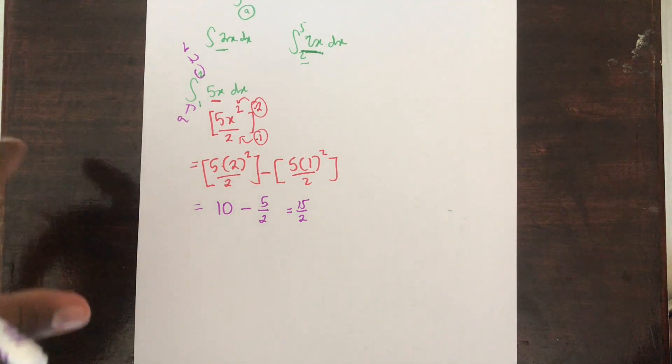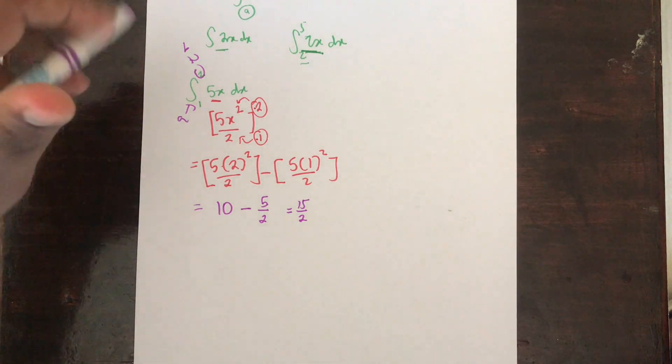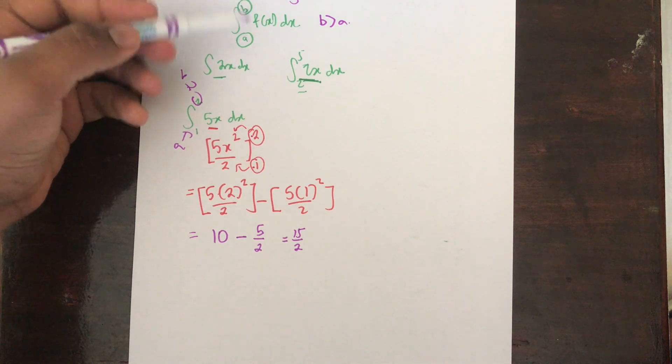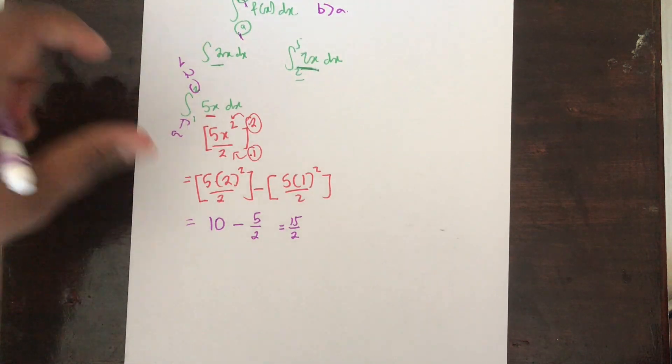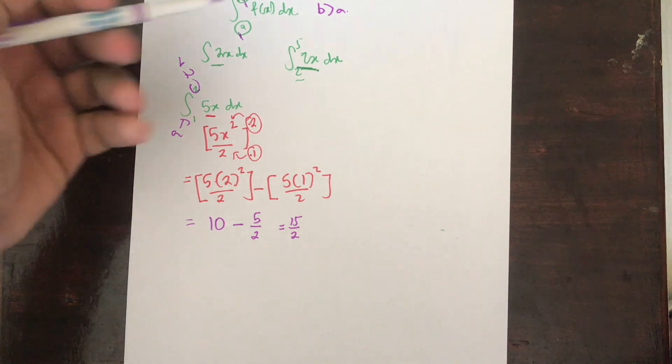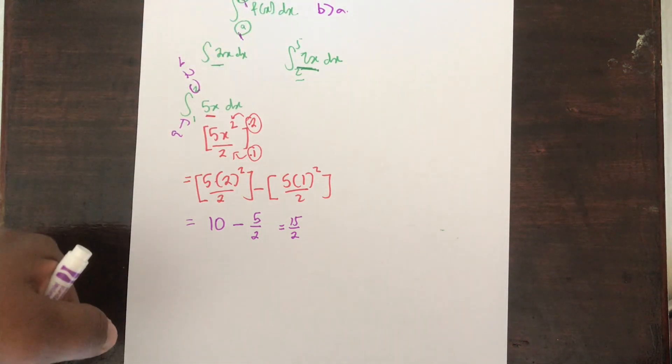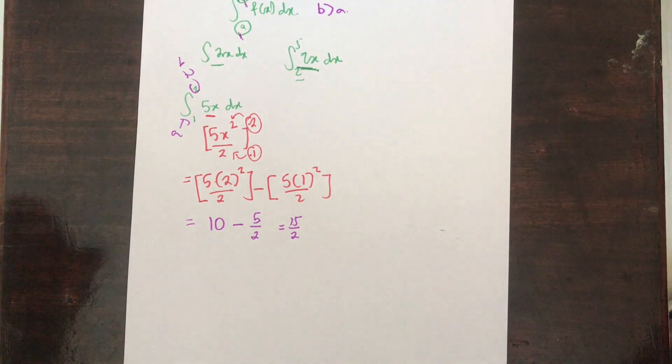Here you're not going to be putting any plus C. You don't put any plus C because you notice that here we are given the values. We are given the limits B and A, and you need to make sure B is going to be greater than A.